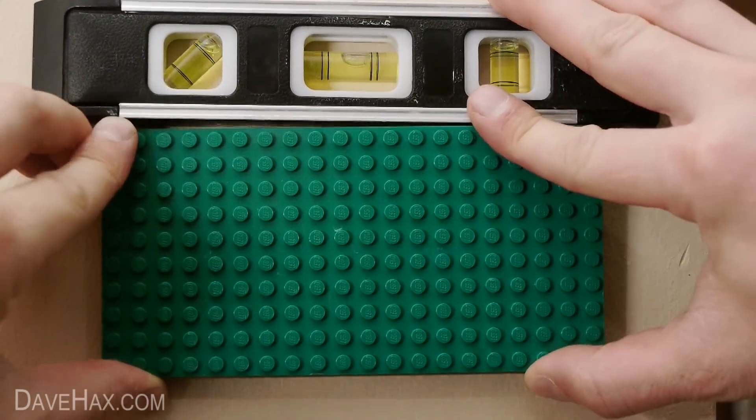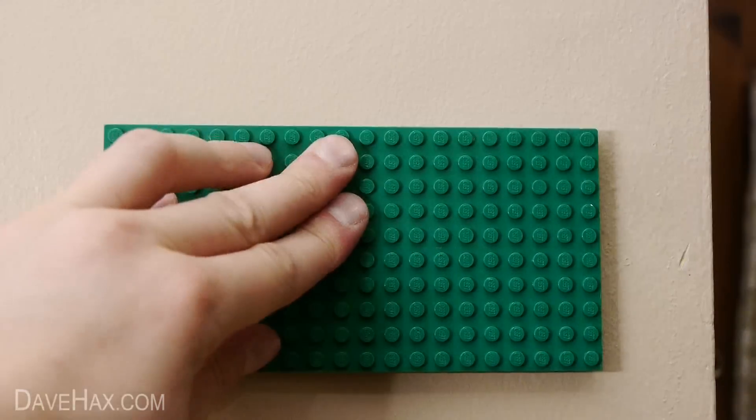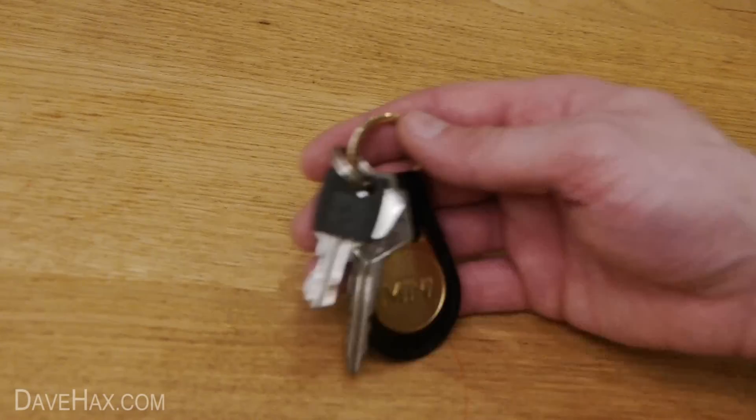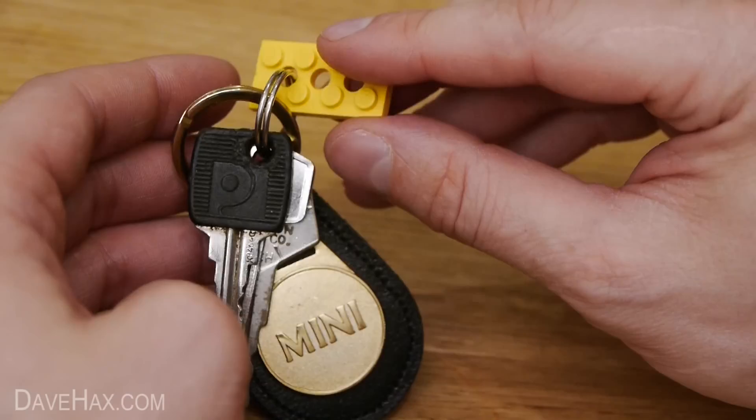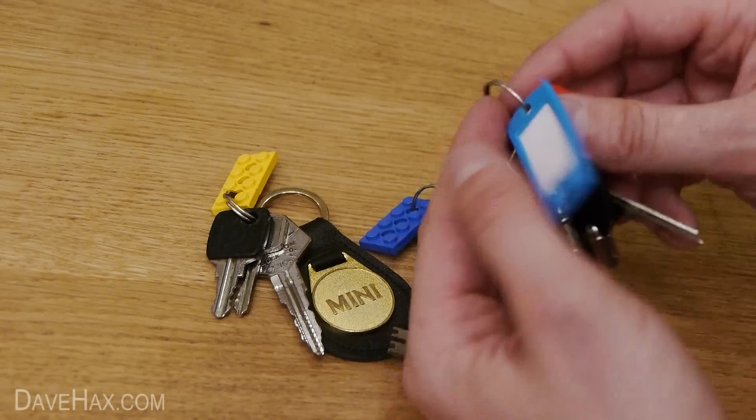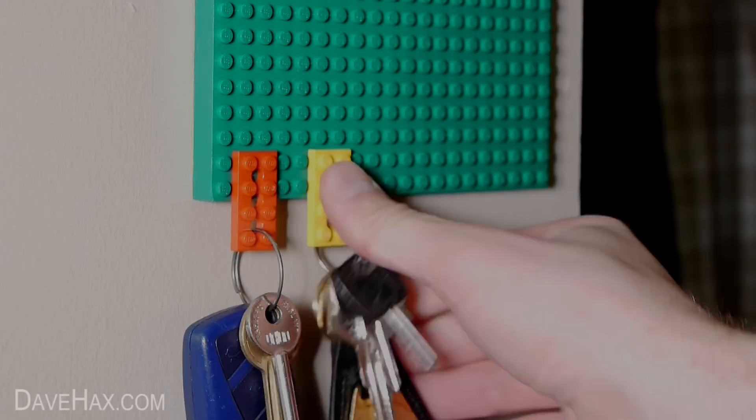Next, find a suitable place on the wall and fix it in place making sure it's level. Then, take your keys and thread one of these Lego plates with holes in onto the key ring like this. Do this with all your key bundles, then go ahead and fix them onto the base plate.